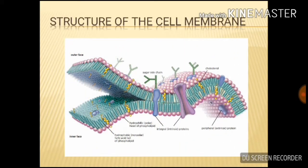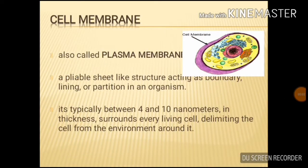This is the structure of the cell membrane. The cell membrane is a pliable sheet-like structure acting like a boundary, lining, or partition in an organism. It is typically between 4 to 10 nanometers in thickness and surrounds every living cell, separating the cell from the environment around it. The cell membrane is selectively permeable to ions and organic molecules and controls the movement of substances in and out of cells. Its basic function is to protect the cell from its surroundings.